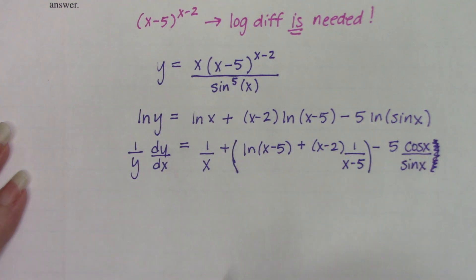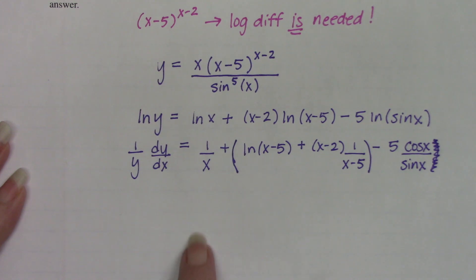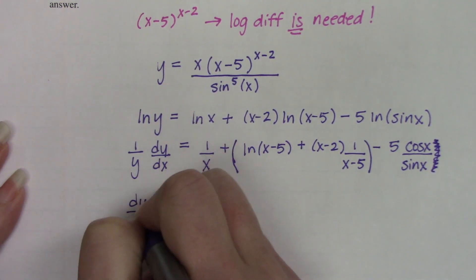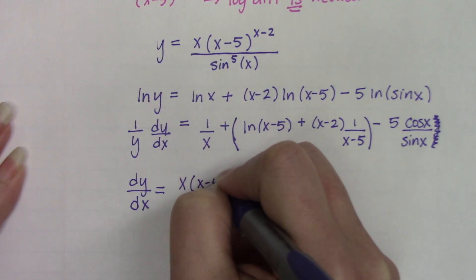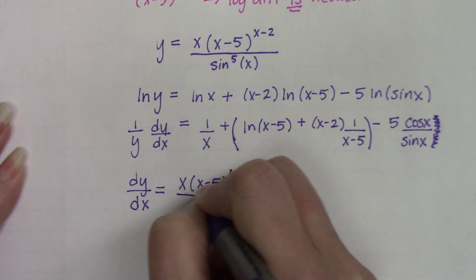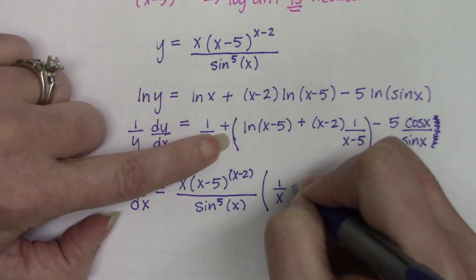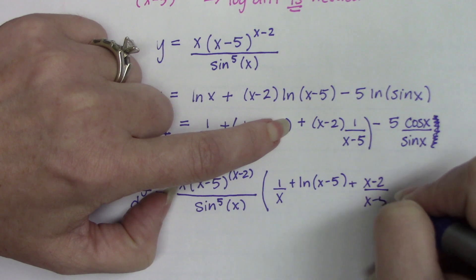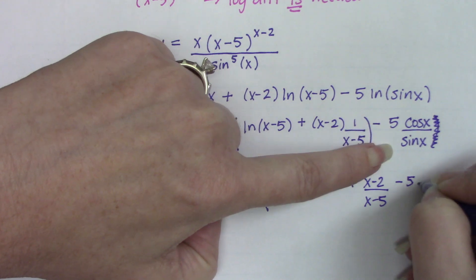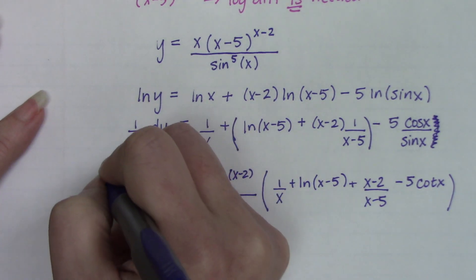So we solve this for dy/dx by multiplying both sides by y. We know y is just the original equation, so substituting it back in one step: y — which is just the original function — times 1 over x plus the natural log of x minus 5, plus x minus 2 over x minus 5, minus 5 times cotangent x. Having cosine over sine is cotangent x; you can leave it as cosine over sine, but cotangent is cleaner. And this is our final answer.